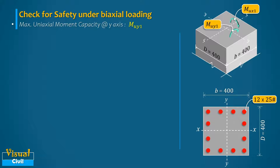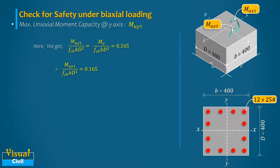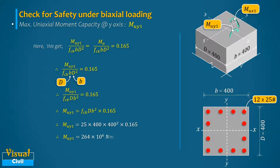Next, compute the maximum uniaxial moment capacity about the y-axis, Muy1. Equating Muy1/(fck·b·D²) = 0.165 as before, and noting that for bending about the y-axis the value of b equals depth D and D equals width b. Substituting the values gives Muy1 = 264 kNm, which is also greater than the design moment Muy.